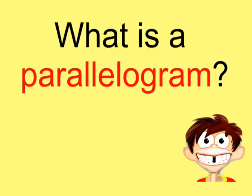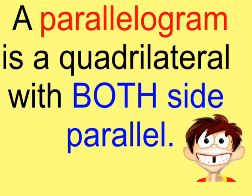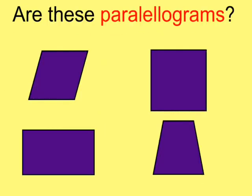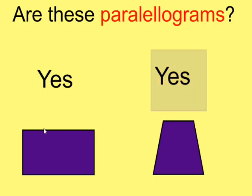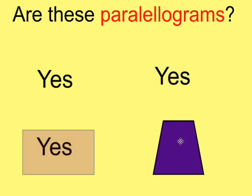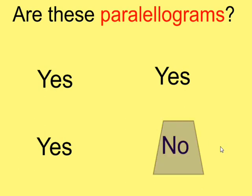So what is a parallelogram? A parallelogram is a quadrilateral with both sides parallel. So are these parallelograms? Well, this has two sets of parallel sides. So that's a parallelogram. Same with this. This also has two sets of parallel sides. This only has one pair of parallel sides. This is a trapezoid. It's not a parallelogram. And we'll be examining trapezoids in another video.